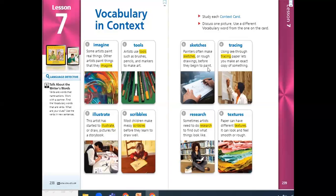Sketches. Painters often make sketches or rough drawings before they begin to paint. This is a draft or sketch. Tracing. Using see-through tracing paper lets you make an exact copy of something. This is a draft of something, this is how you trace.